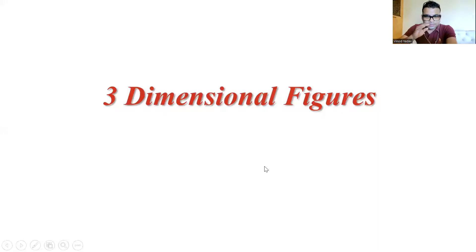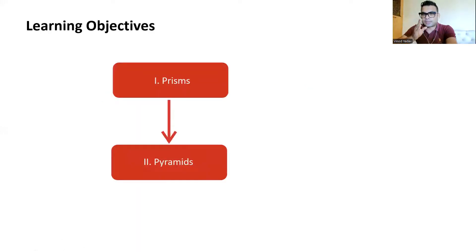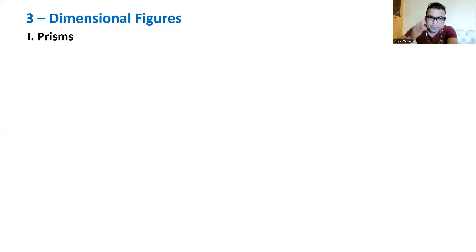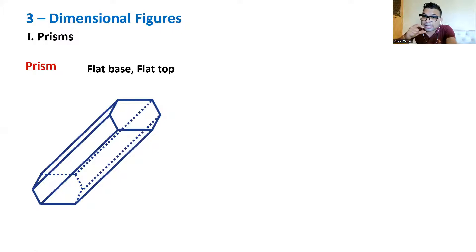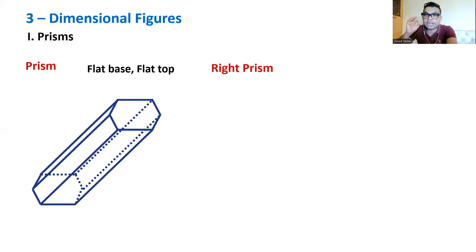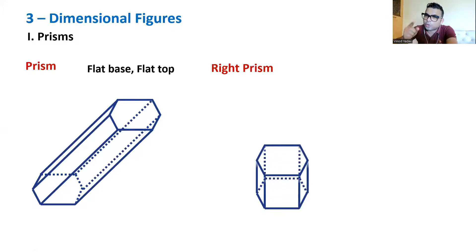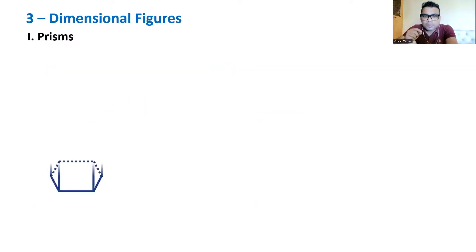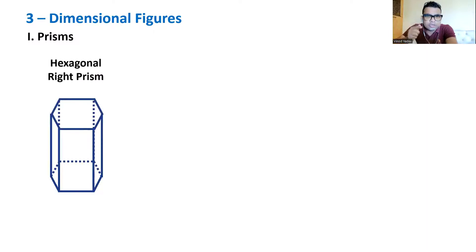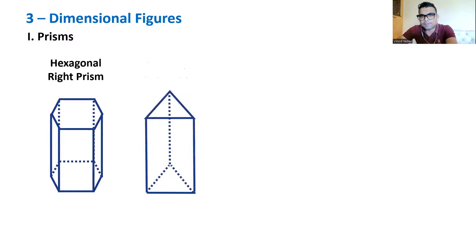All 3D figures are classified into two categories: prism-based and pyramid-based. A prism has a flat base, flat top, and rectangular side walls. A right prism means the side walls are perpendicular to both the base and the top — just like a right angle relates to 90 degrees. Depending on the shape of the base and top, we name it accordingly: for example, a hexagonal right prism or a triangular right prism.